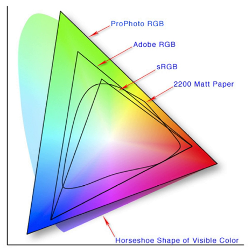RGB uses additive color mixing, because it describes what kind of light needs to be emitted to produce a given color. RGB stores individual values for red, green, and blue. RGBA is RGB with an additional channel, alpha, to indicate transparency. Common color spaces based on the RGB model include sRGB, Adobe RGB, ProPhoto RGB, scRGB, and CIE RGB.